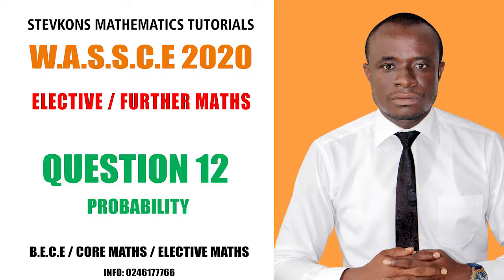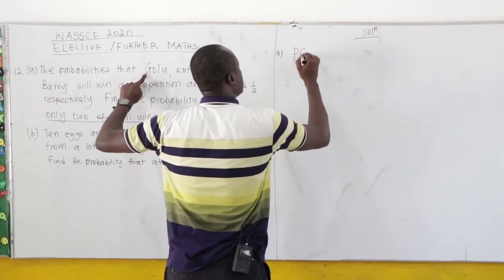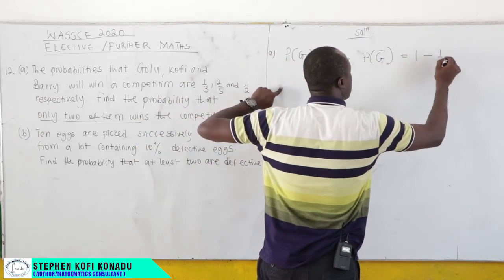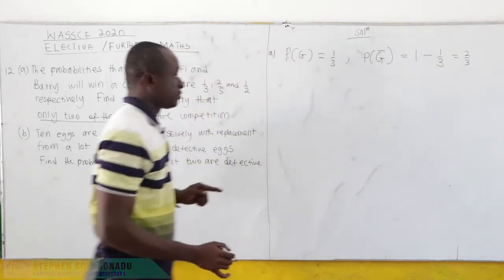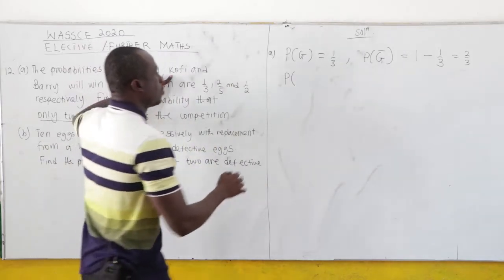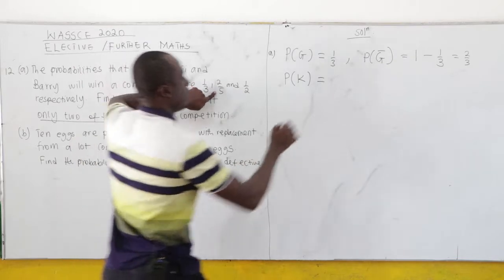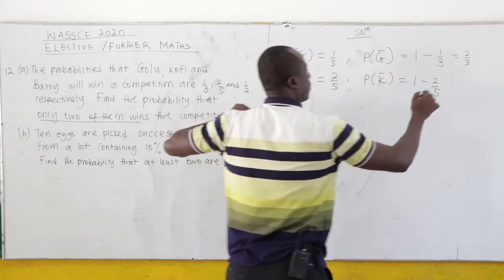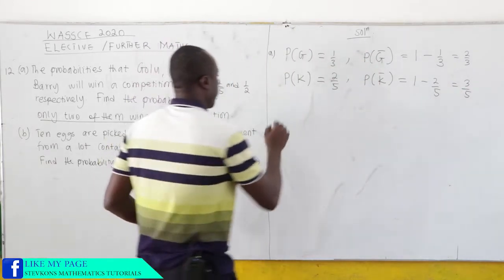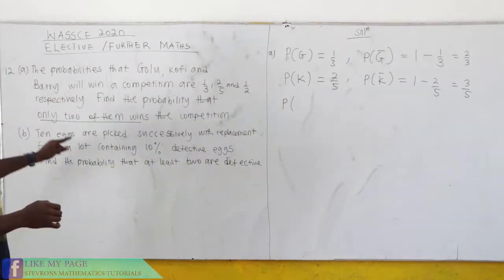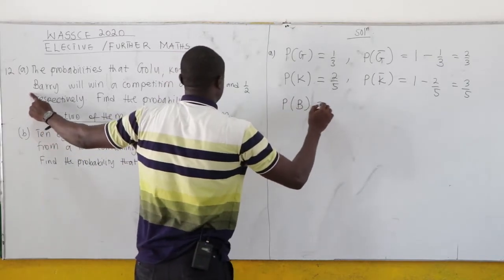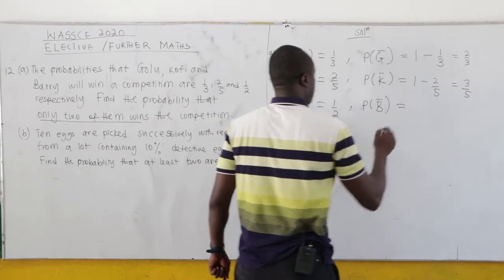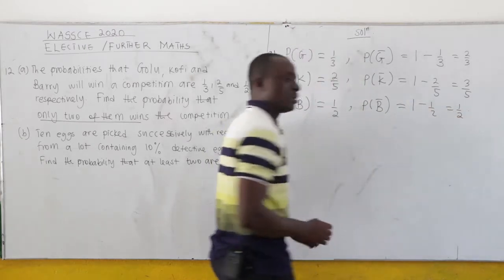So for part 12A: the probability that Golu will win is 1 over 3, hence the probability that Golu will not win is 1 minus 1 over 3, which is 2 over 3. The probability that Kofi will win is 2 over 5, and the probability that Kofi will not win is 1 minus 2 over 5, which is 3 over 5. The probability that Barry will win the race is 1 over 2, and the probability that Barry will not win is 1 minus 1 over 2, which is also 1 over 2.